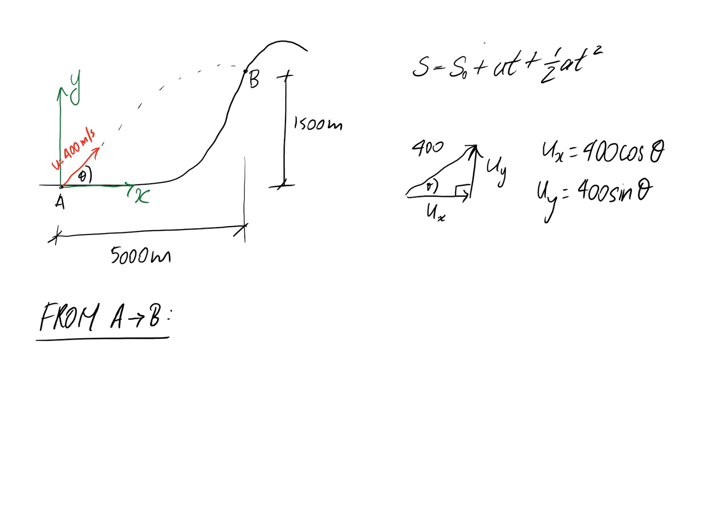Let's start with the X direction, looking at the flight from A to B. Our final position in the X direction is at B, at a distance of 5000 meters from the origin. Our initial position S0 in the X direction is at the origin, so it's zero.